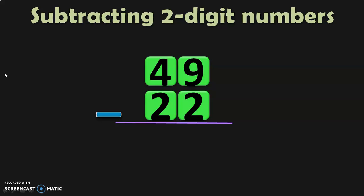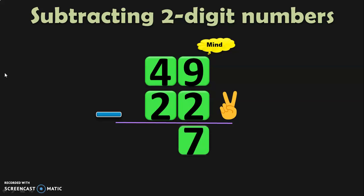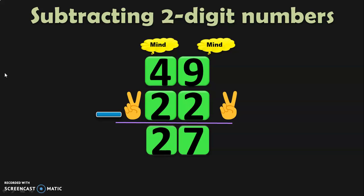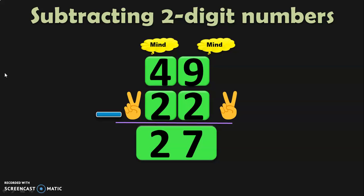Now we are going to subtract two-digit numbers: 49 minus 22. Begin the subtraction from the ones place. 9 in the mind and 2 in the fingers — before 9, it is 8, 7. Next move on to the tens place — 4 minus 2. 4 in the mind, 2 in the fingers — before 4, it is 3, 2. So 49 minus 22 gives you the answer 27.